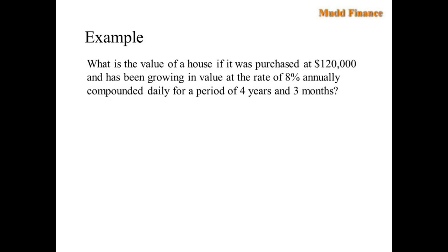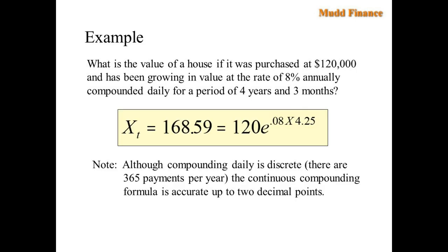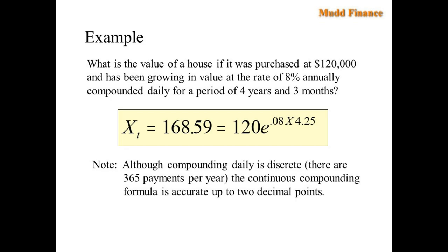So in application, perhaps we can ask what's the value of a house if it was purchased at $120,000 and has been growing in value at the rate of 8% annually compounded daily for a period of 4 years and 3 months? And the answer is $168,590. So you might say you didn't say anything about compounding daily, this is supposed to be a continuous growth rate. Well it turns out that if you're compounding daily and comparing it to continuous compounding, then the value is the same up to 2 decimal points. So one's a pretty good proxy for the other. So we can think of continuous compounding as instantaneous compounding or perhaps compounding daily.